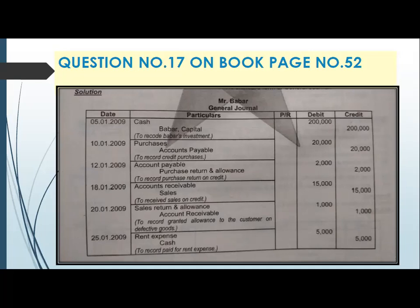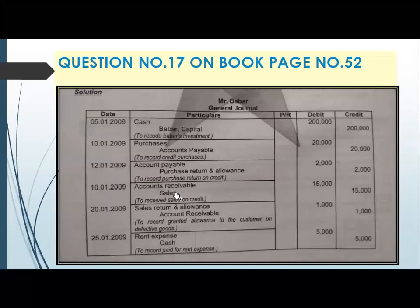Exam question number 17 is on book page number 52, and it is your home task. I am requesting you to prepare the T-account of accounts receivable right now with me. We will prepare one T-account of accounts receivable which has two sides — the debited side and the credited side. From question number 17, the T-account of accounts receivable will have 15,000 on the debited side, and on January 20 there will be 1,000 on the credited side. The balance will be 14,000.